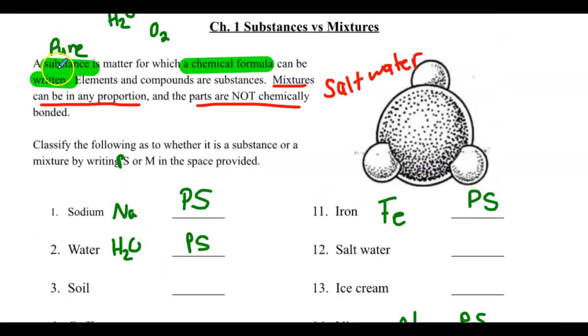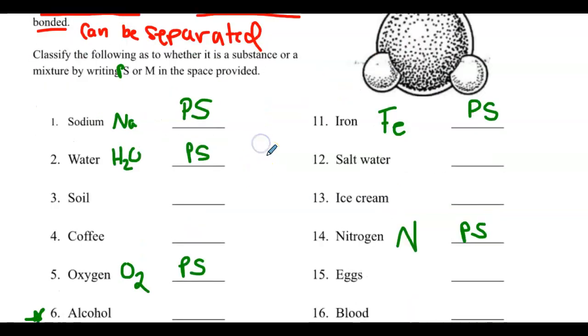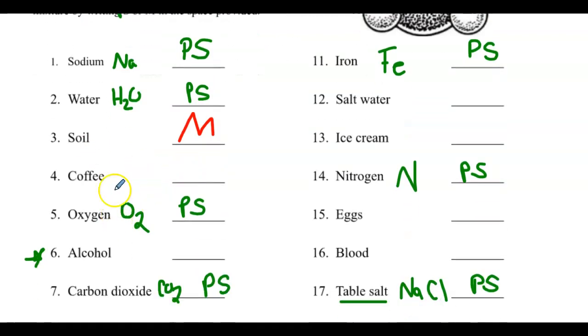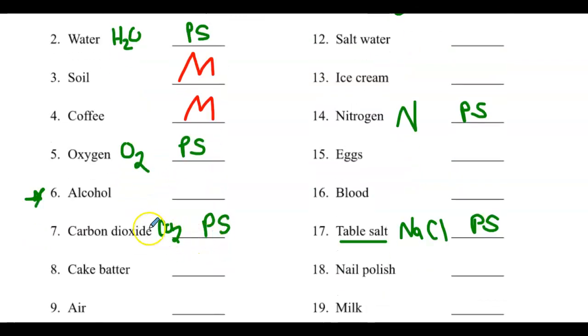So I went through, and we did all the easy ones that we know are pure substances. Now, to see if it's a mixture, there should be different components that can be in any proportion, but they're not chemically bonded. That means mixtures can be separated. So that's kind of the question we're going to ask ourselves here. Soil, it's a mixture. I can go through, I can pick out the dirt and the rocks and the grassroots and the worms and all the other stuff that's in there. Coffee. How do I make it? I mix beans with water and maybe cream or flavoring. That's a mixture.